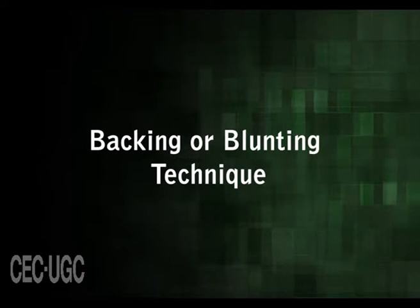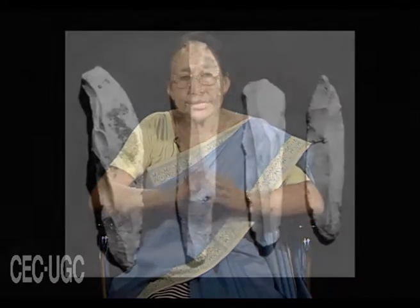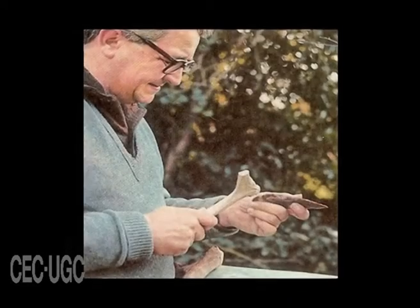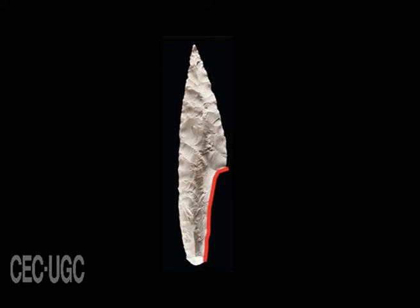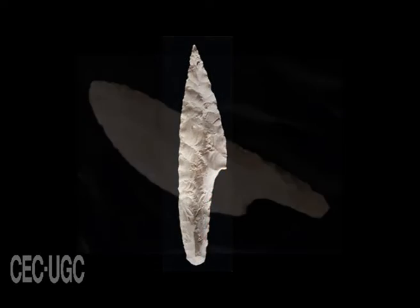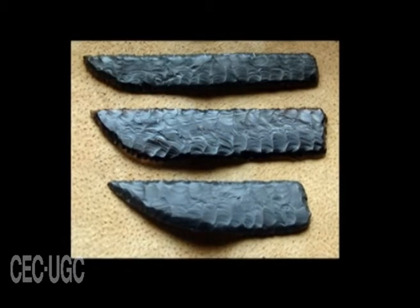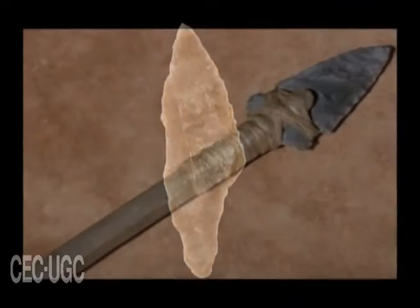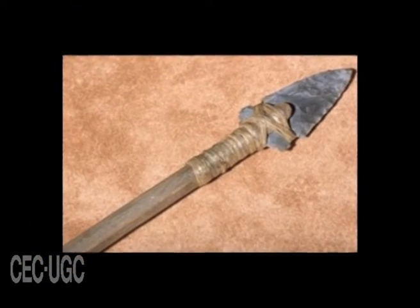Blades manufactured by the fluting technique were further retouched to form specific tools. Since every blade had two ready-made sharp edges, retouching was mainly done to blunt a specific area out of the two already present borders. The area chosen and the manner of blunting depended on the requirement of the maker. These bluntings were done mainly to afford a firm hafting of blades onto handles.